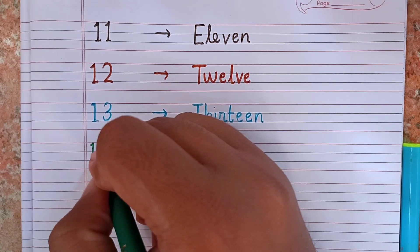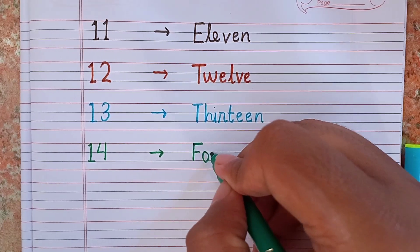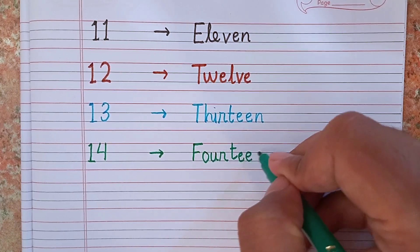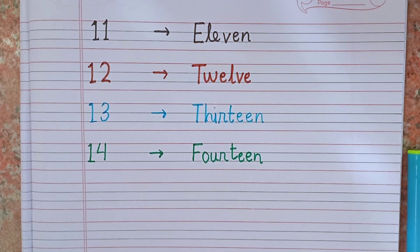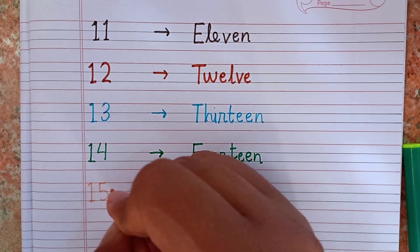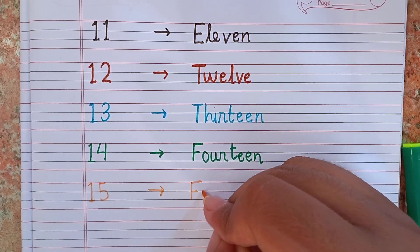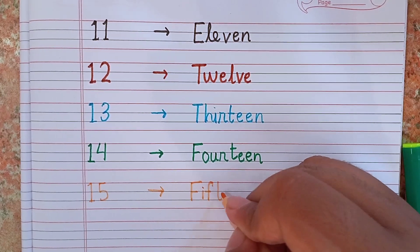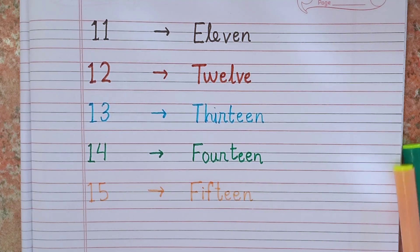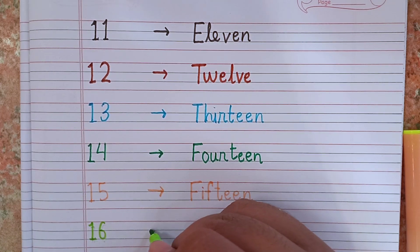After 13, I am writing 14. The spelling of 14 is F O U R T double E N. After 14, what comes next? Number 15. Now I am writing number 15. The spelling of 15 is F I F T double E N. Remember the spelling kids.